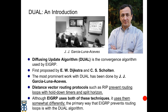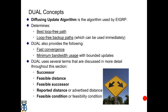The Diffusing Update Algorithm, or DUAL, is the convergence algorithm used by EIGRP. It was first proposed by EW Dijkstra and C.S. Scholten, and the most prominent work with DUAL has been done by J.J. Garcia-Luna-Aceves. Distance vector routing protocols such as RIP prevent routing loops with hold down timers and split horizon rules. Although EIGRP uses both of these techniques somewhat differently, the primary way EIGRP prevents routing loops is with the DUAL algorithm.